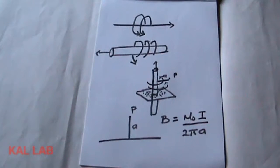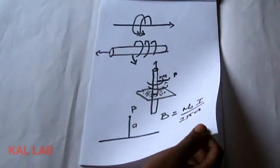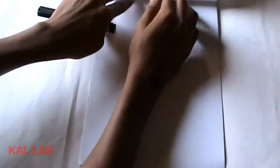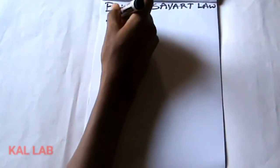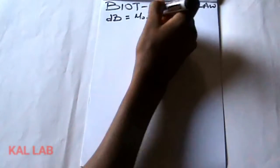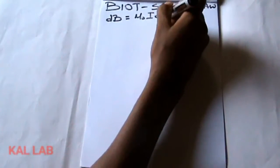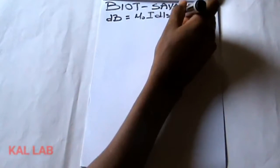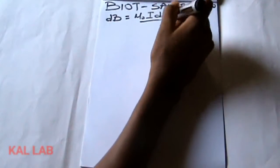As a good physics student, it is an added advantage if we know how to prove or derive a formula, not just to use it. So in order to prove this formula we are going to be using Biot-Savart's law, which states that dB is equal to μ₀ · I · dl · sinφ divided by 4πr².